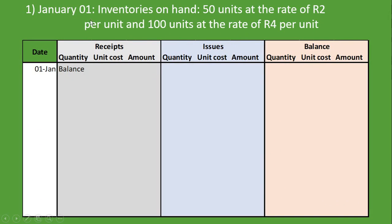The first transaction: on the 1st of January, inventories on hand were 50 units at 2RN per unit and 100 units at 4RN per unit. We put our date, and under receipts we document the balances from the previous period. Under balances we document exactly what inventory we have: 50 units at 2RN per unit with a total of 100RN, and 100 units at 4RN per unit with their total.